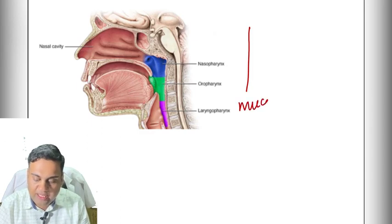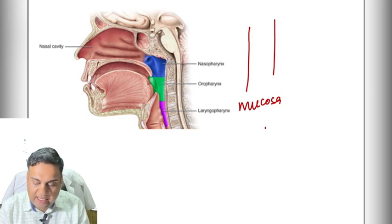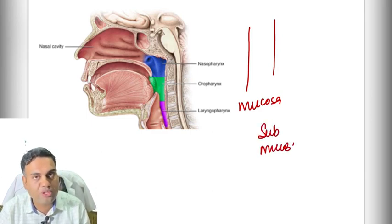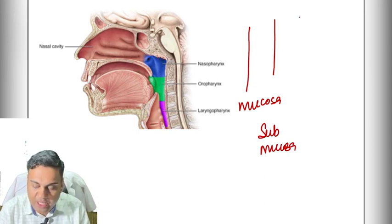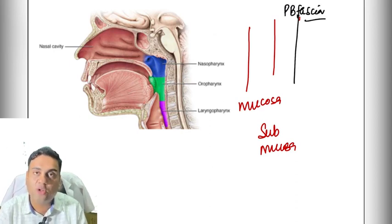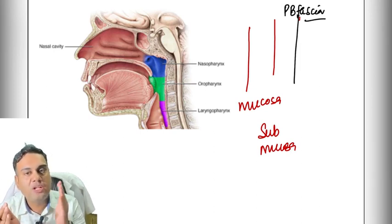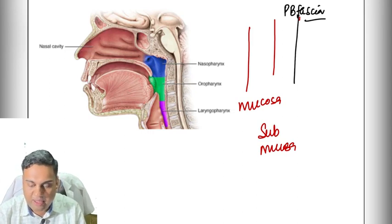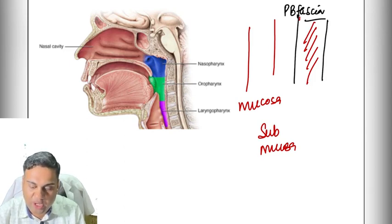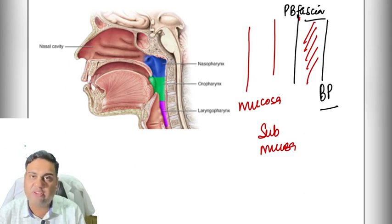The third important layer is called the pharyngeal basilar fascia — a connective fascia covering the muscles of the pharynx. The fascia on the anterior side is called the pharyngobasilar fascia, and the posterior fascia is called the buccopharyngeal fascia. Then come the muscles of the pharynx as the fourth layer, and the buccopharyngeal fascia as the fifth layer.